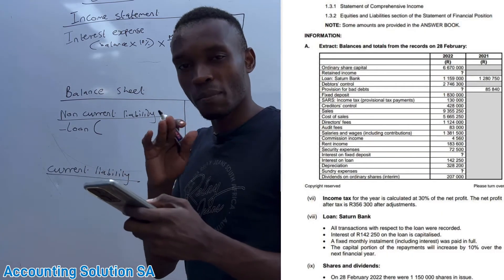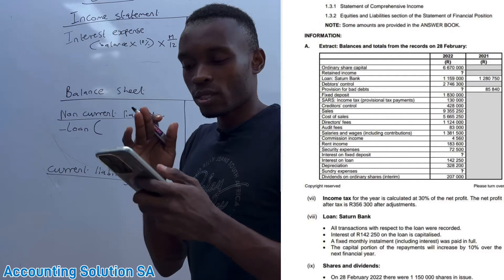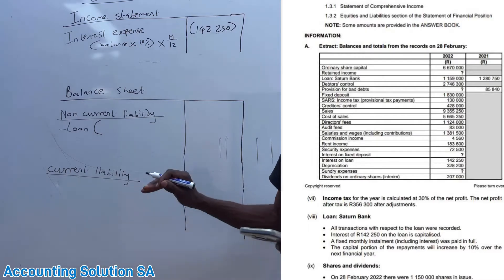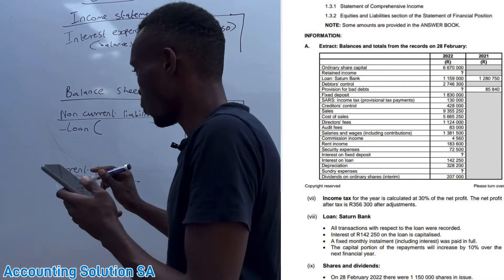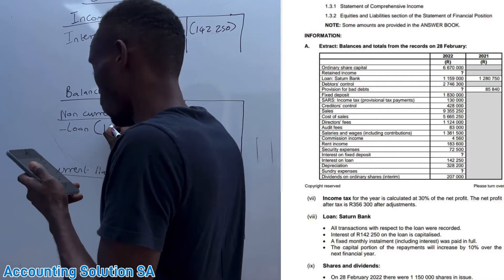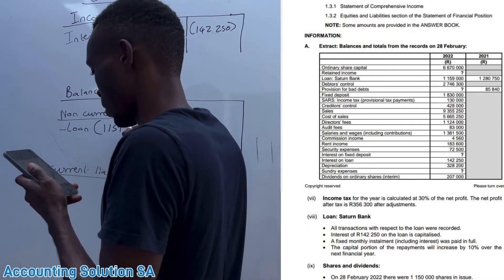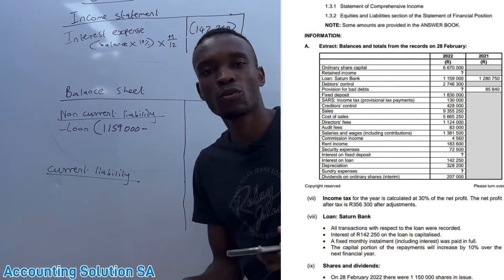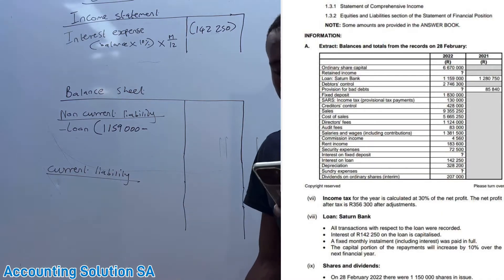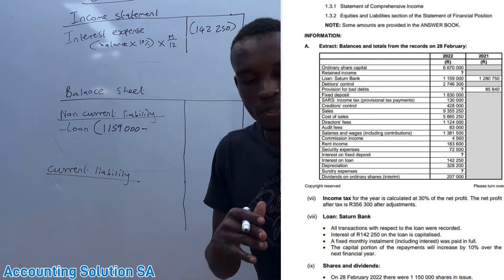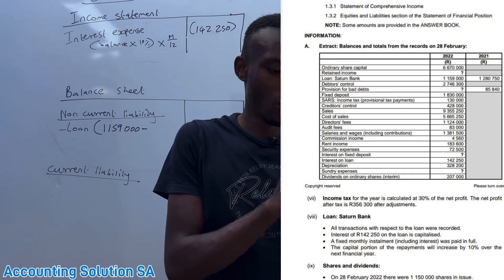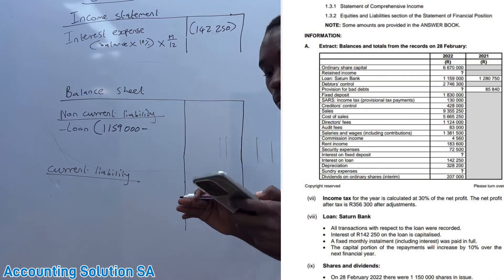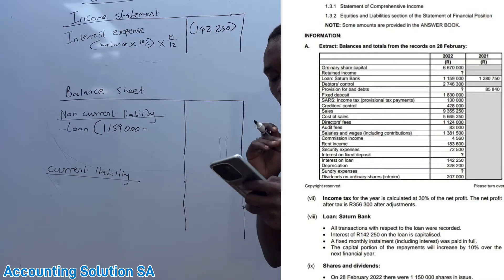We start from the balance at the end, not the balance at the beginning. After that we subtract the current portion of a loan. The current portion of a loan — in this case it's very simple: you just take the difference between last year's amount and this year's amount. After that we have to look at bullet number four.